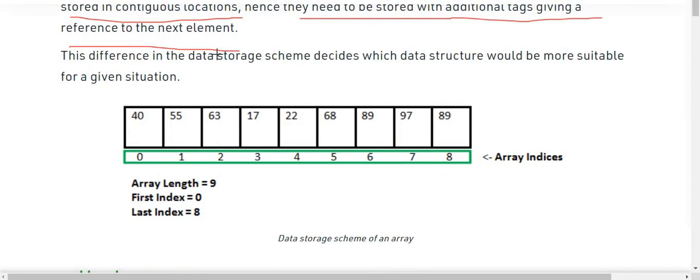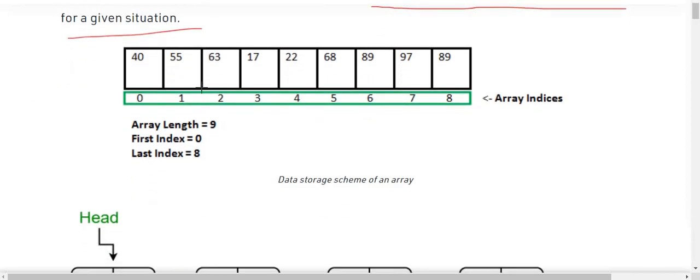The difference is the data storage scheme which determines which data structure would be more suitable for a given situation. For example, here we have an array of length 9 and it has index starting from 0 and going on to 8. These are known as array indices or array indexes. So the length of this array is 9, first index is 0 and last index is 8.